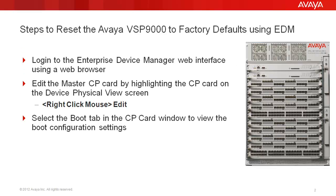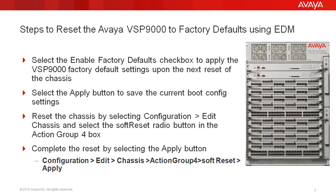In our tech tip example, we'll log into the VSP9000 using the Enterprise Device Manager web interface. We'll edit the Master CP Card by highlighting the CP Card on the Device Physical View screen with a right mouse click and selecting Edit. We'll select the Boot tab in the CP Card window to view the boot configuration settings. We'll select the Enable Factory Defaults checkbox to apply the VSP9000 factory default settings upon the next reset of the chassis.